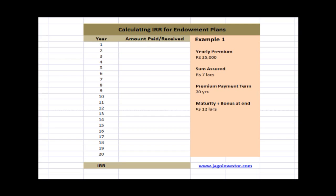The first example is an endowment plan. Let's say the yearly premium is 35,000 rupees, the sum assured is 7 lakh rupees, the premium payment term is 20 years, and at the end of the term you are going to get 12 lakh rupees including bonus. It's a plain endowment plan — you just pay the premium and don't get any money back in between.